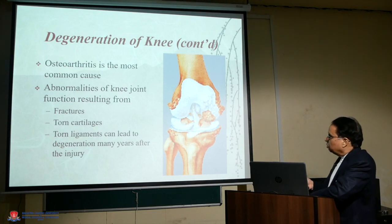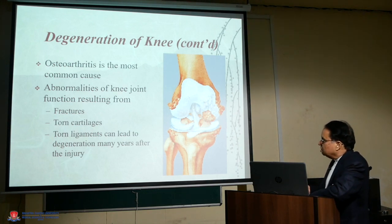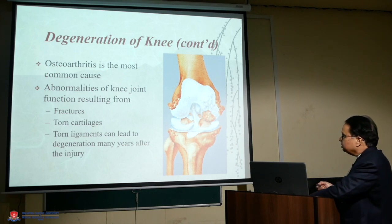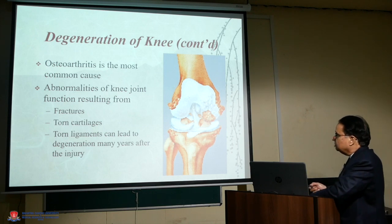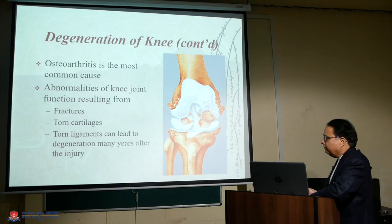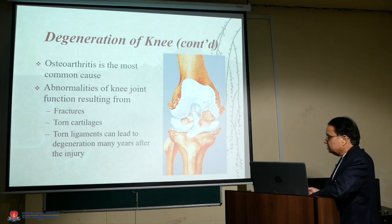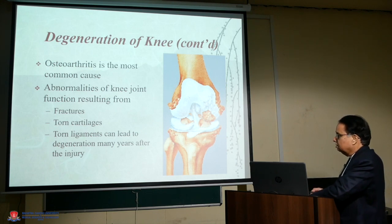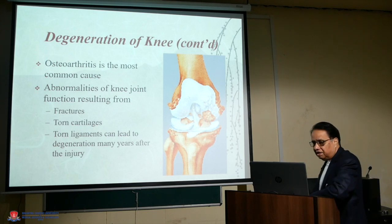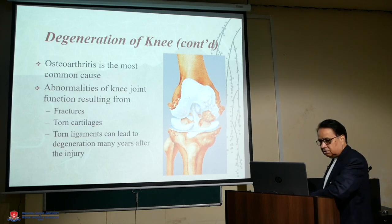This is the most common cause. Abnormality of the knee joint results in functional impairment. Sometimes there are minor fractures. Ligaments are also affected. And it is an aging process.